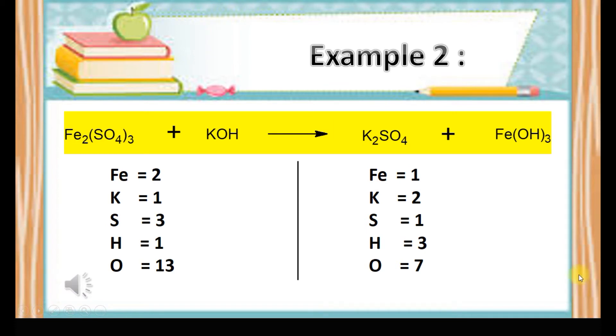Let's try Example 2. Iron sulfate reacts with potassium hydroxide to produce potassium sulfate and iron hydroxide. The equation is not balanced, so first step: count the number of elements on the left and right side. On the left side, Fe is 2, K is 1, S is 3, H is 1, O is 13. On the right side, Fe is 1, K is 2, S is 1, H is 3, O is 7.